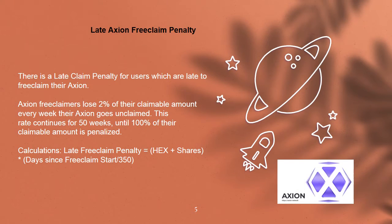There is a late claim penalty for users who are late to free claim their Axion. Axion free claimers lose 2% of their claimable amount every week their Axion goes unclaimed. This rate continues for 50 weeks, until 100% of their claimable amount is penalized. The calculation is: late free claim penalty = HEX shares × (days since free claim start / 350).